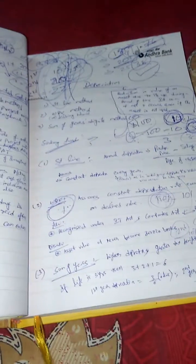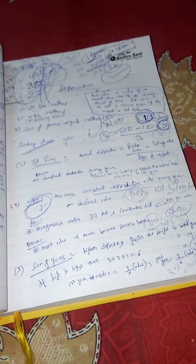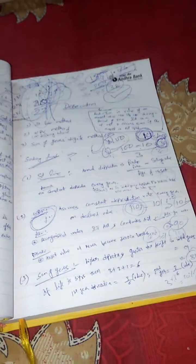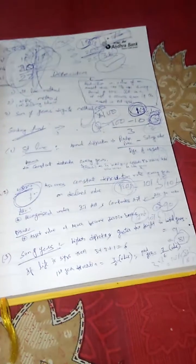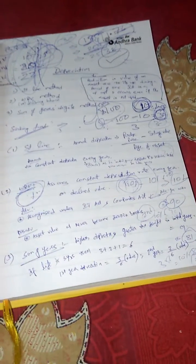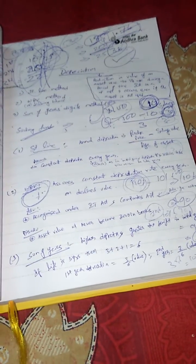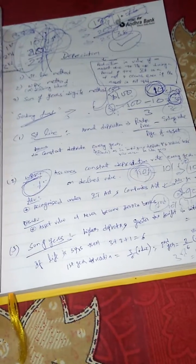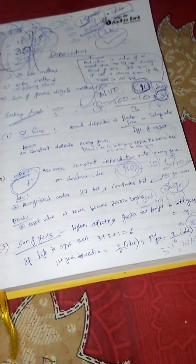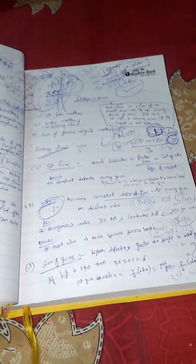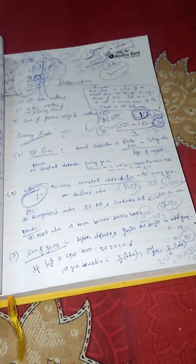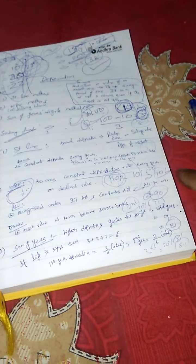So in return on value method, the depreciation percentage — rate of depreciation — will be assumed as constant, and that percentage of the declined value of an asset will be charged as depreciation. That is why it is called return on value — that percentage will be applied not on the original value of the asset but on the depreciated value of asset at each year.